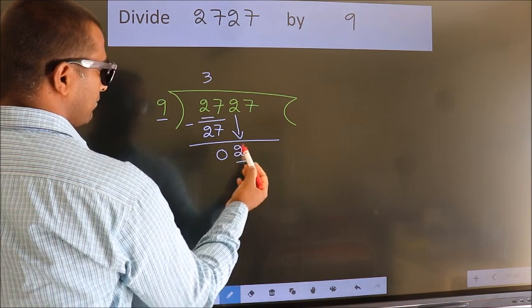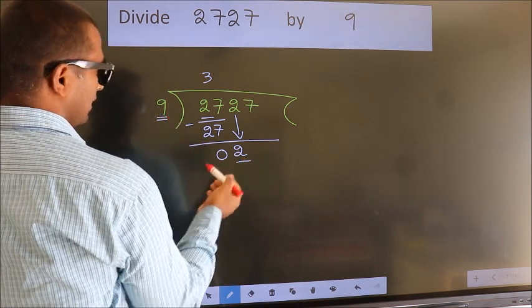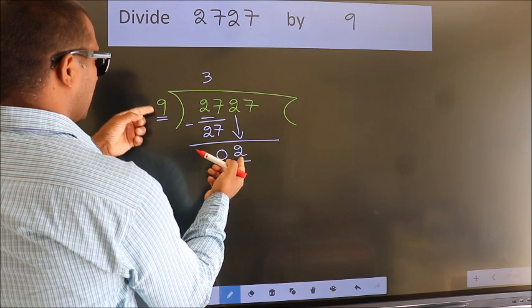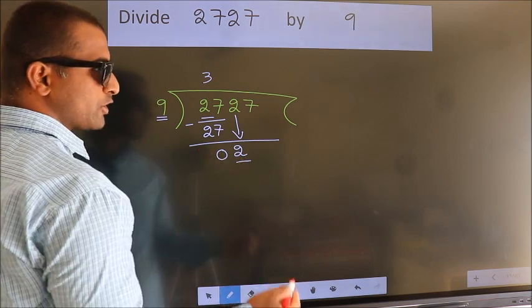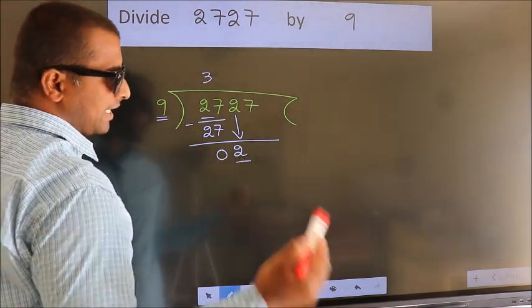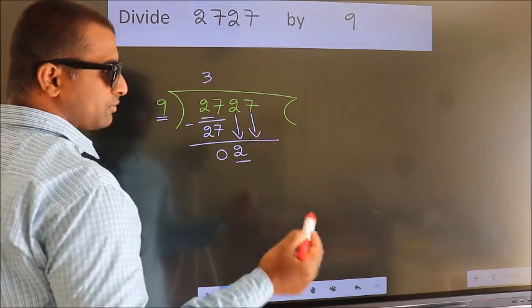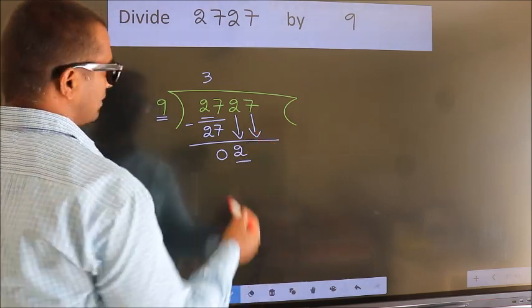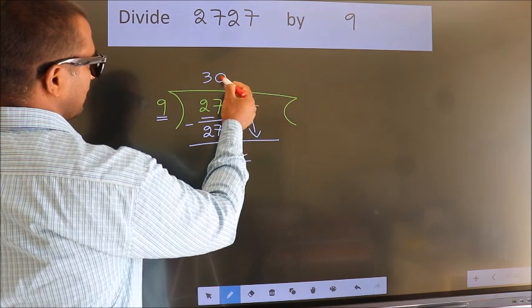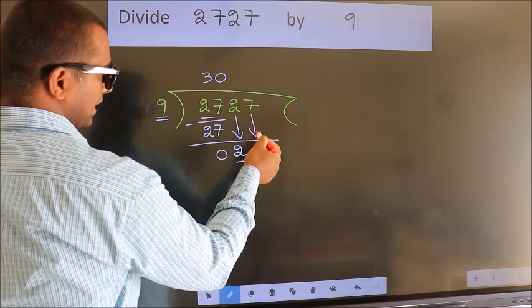Here we have 2. Here 9. 2 is smaller than 9. So we should bring down the second number. And the rule to bring down the second number is, put 0 here. Then only we can bring down this number.